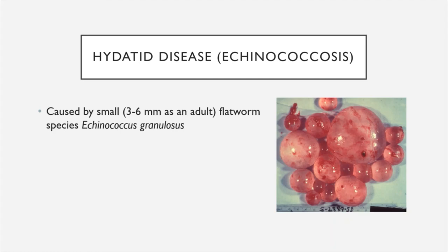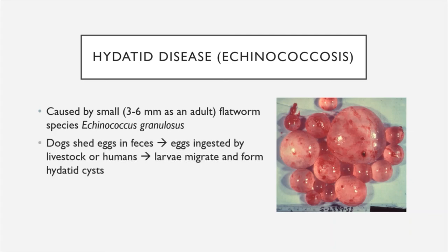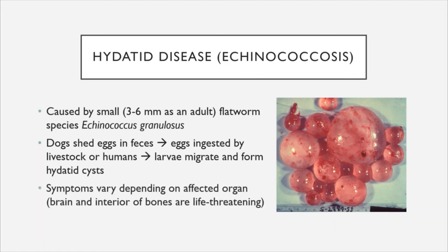Next, we have Hydatid disease, also known as Echinococcosis, caused by the tiny flatworm Echinococcus granulosus, which only reaches three to six millimeters as an adult. Its life cycle often involves dogs and other livestock including sheep. Eggs are shed in the feces of an infected animal and then ingested by livestock or humans. The larvae migrate to other parts of the body and form Hydatid cysts — fluid-filled cysts. Symptoms vary depending on where the cysts are lodged; when they form in the brain or interior of bones, the disease can become life threatening.